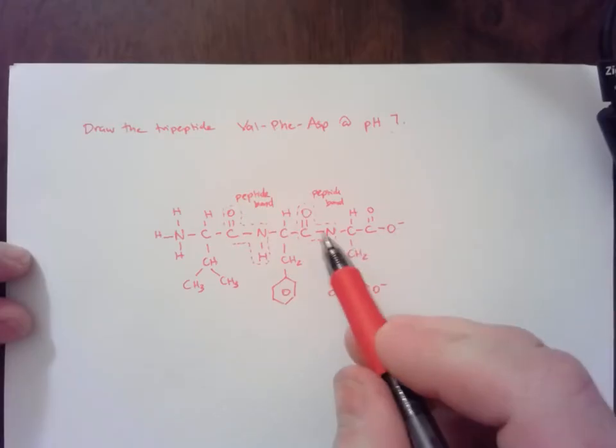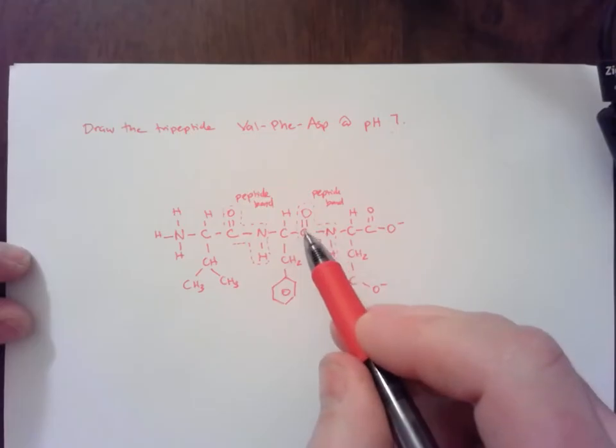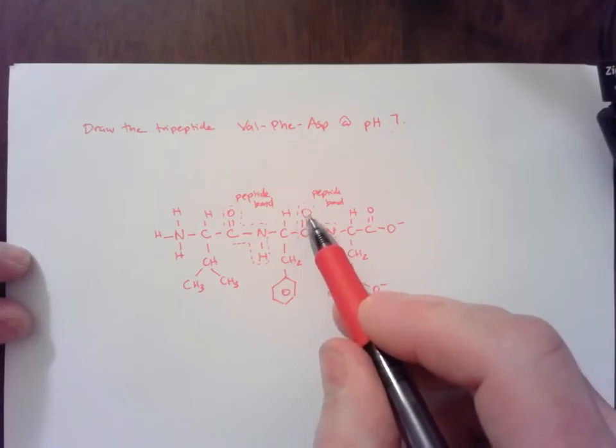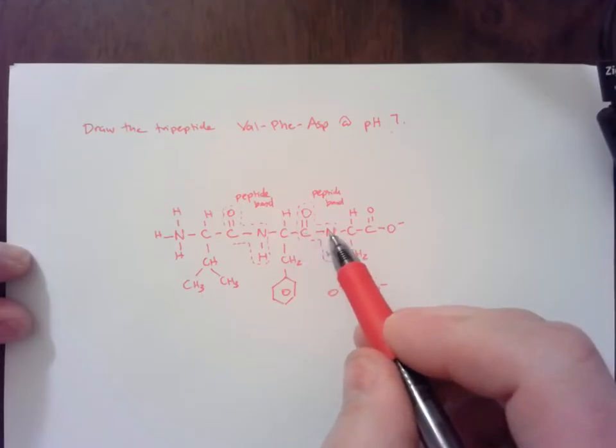One of the biggest mistakes people make is putting an extra oxygen in here. Don't make that mistake. There's only one oxygen up here, and then it goes right to that nitrogen. So there's no oxygen between this carbon and the nitrogen.